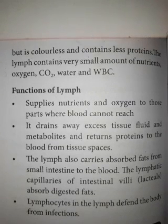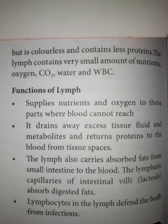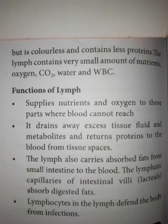The lymphatic system consists of the lymphatic capillaries, lymphatic vessels, lymph nodes, and the lymphatic ducts. Lymph is a fluid formed when plasma proteins and blood cells escape into the intercellular spaces. It is a colorless fluid containing less proteins, small amounts of nutrients, oxygen, carbon dioxide, water, and white blood cells.